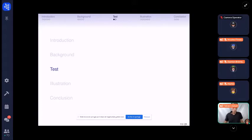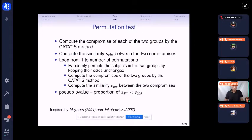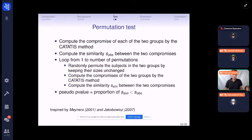So I will introduce the test. I remind that we consider two predefined groups of subjects and we want to know if the perception between the two groups of subjects is different or not. So the first step is to compute the compromise of each of the two groups, which is achieved by the CATATIS method. After, we compute the similarity between the two compromises. So the similarity is given by the Ochiai coefficient and this similarity is our observed value. And for a large number of permutations, for example one thousand, we randomly permute the subjects into two groups by keeping their sizes unchanged.